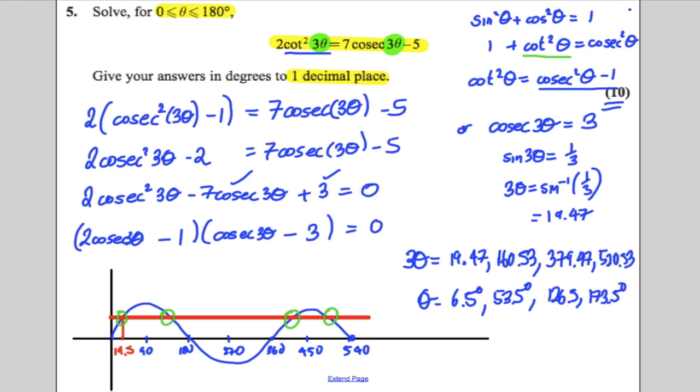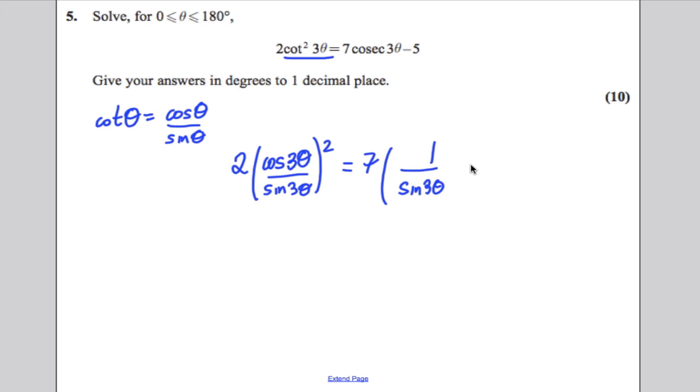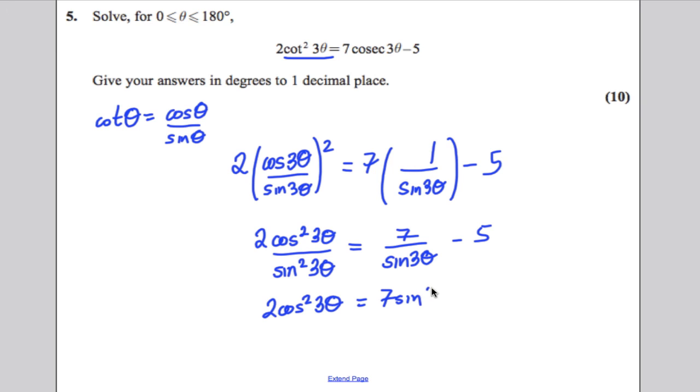Okay, I'm just going to quickly show you this the other way. What some students like to do is translate this back into sines and cosines. So, they're going to write cot squared, well, they know that cot of theta is cos over sine. So, they're going to replace this by 2 cos of 3 theta over sine of 3 theta squared. And they're going to say that's equal to 7 cosec, and cosec is 1 over sine of 3 theta, subtract 5. So, they're going to square this, and they're going to get 2 cos squared 3 theta over sine squared 3 theta is equal to 7 over sine 3 theta, subtract 5. They multiply everything by sine squared 3 theta to remove this off the bottom, and they get 2 cos squared 3 theta is equal to 7 sine of 3 theta, because sine squared over sine just gives me sine on top, minus 5 sine squared of 3 theta.